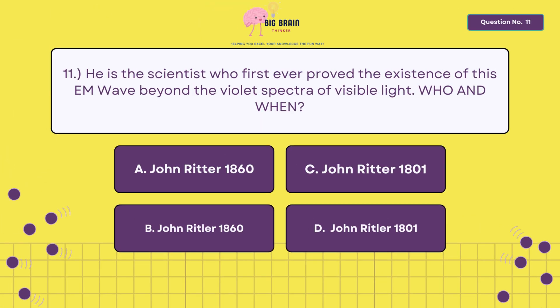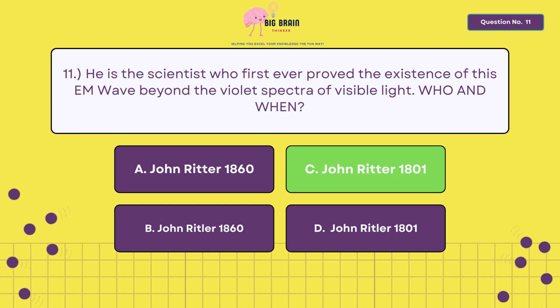Eleven, he is the scientist who first ever proved the existence of this EM wave beyond the violet spectrum of visible light. Who and when? The answer is letter C, John Ritter, 1801.